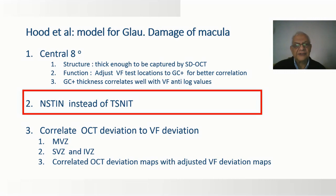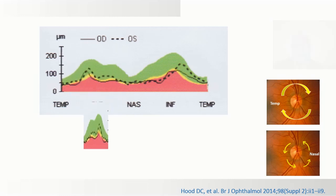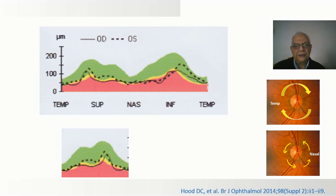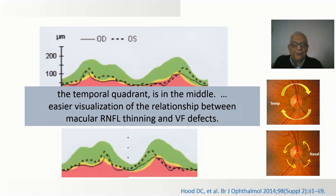Second, they suggested that instead of doing the examination from temporal to superior to nasal to inferior to temporal as we are accustomed to, they changed it to start from the nasal side. By doing such a thing, we end up having the temporal area in the center of the print, and this makes it easier to visualize the relation between the macular nerve fiber layer thinning and the visual field effect.